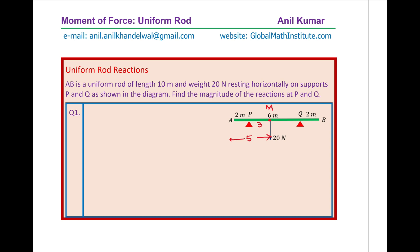The best approach is to resolve the forces vertically first. Equilibrium means forces acting upwards and downwards should be equal. Therefore, the reaction force at P, which is RP, and the reaction force at Q, which is RQ, are the upward forces. So RP plus RQ should equal the downward force, which is the weight of 20 newtons. That becomes our first equation.